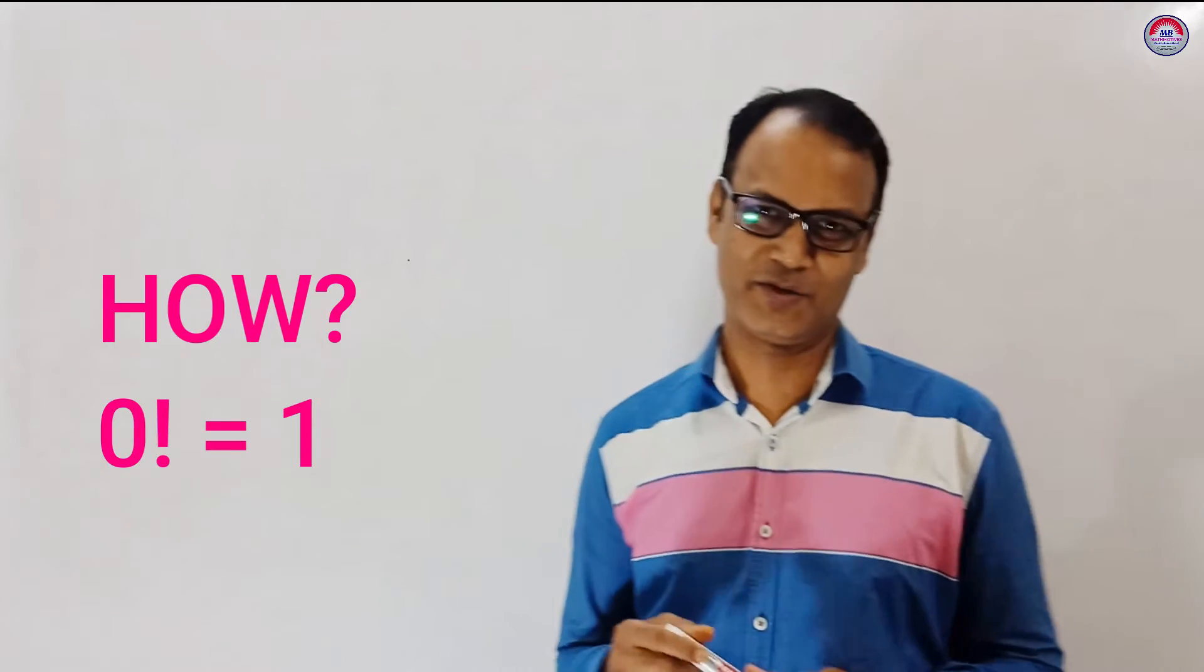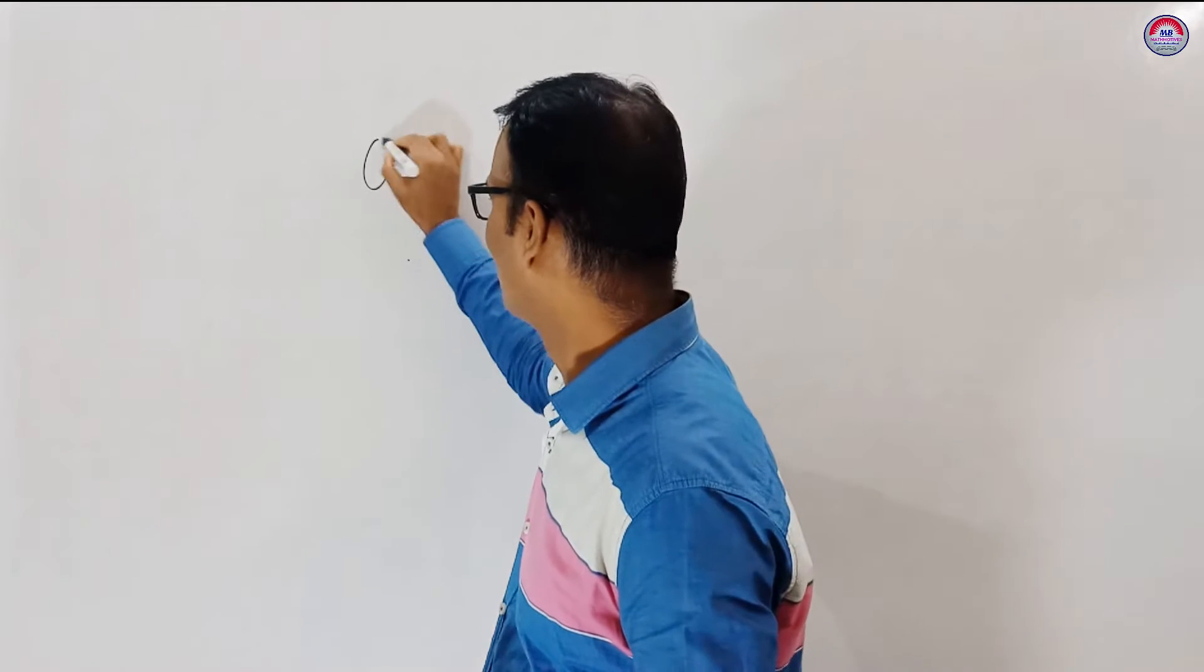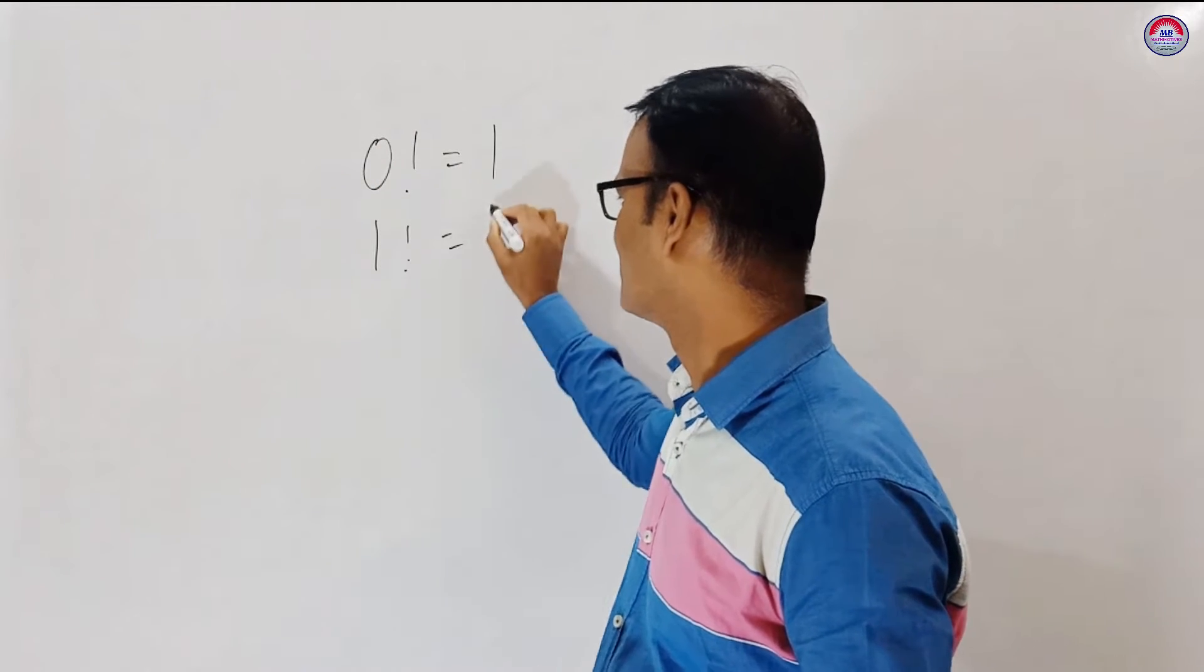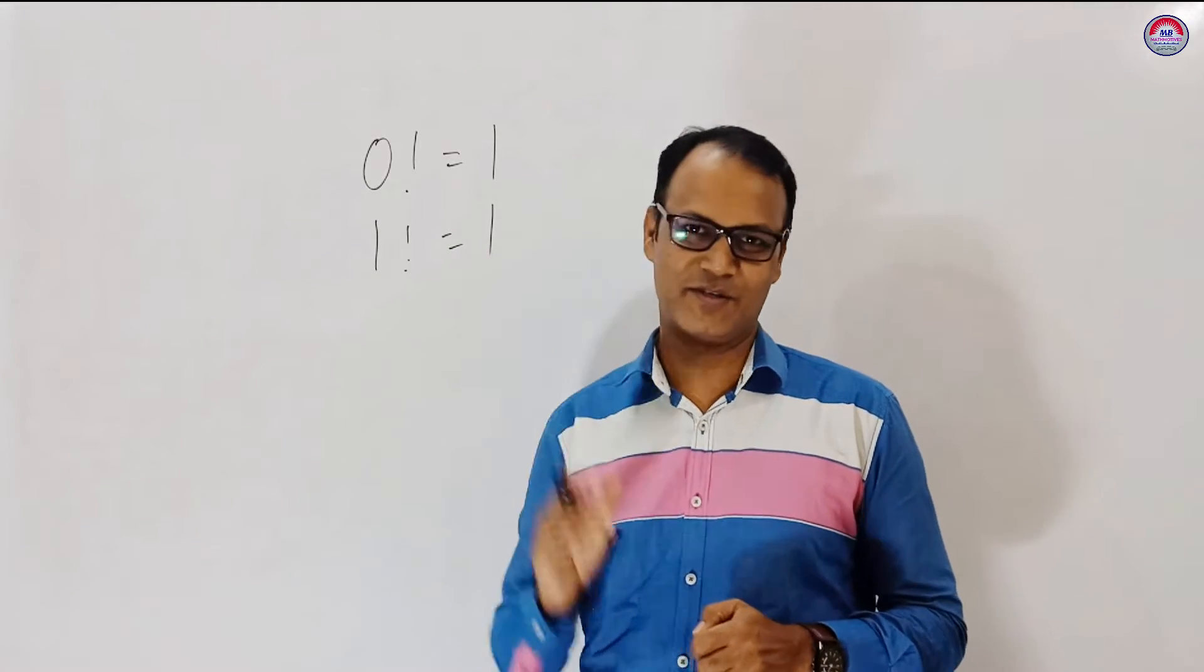So let us start. How 0 factorial is equal to 1? What is 0 factorial? 0 factorial is equal to 1. We know that 1 factorial is equal to 1. But how 0 factorial is equal to 1?